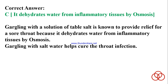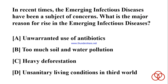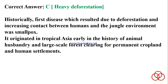Gargling with salt water helps cure throat infection. In recent times, the emerging infectious diseases have been a subject of concern. What is the major reason for the rise in emerging infectious diseases? A) Unwarranted use of antibiotics. B) Too much soil and water pollution. C) Heavy deforestation. D) Unsanitary living conditions in third world. Correct answer: C. Heavy deforestation. Historically, the first disease which resulted due to deforestation and increasing contact between humans and the jungle environment was smallpox, which originated in tropical Asia early in the history of animal husbandry and large-scale forest clearing for permanent cropland and human settlements.